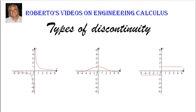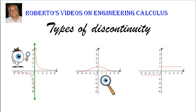What you see in front of you are the three most common types of discontinuity. On the left hand side you have what we normally call an asymptote — a vertical line that the curve approaches. In the middle we have what's called a single point hole; it's a very tiny thing where just one point is missing.